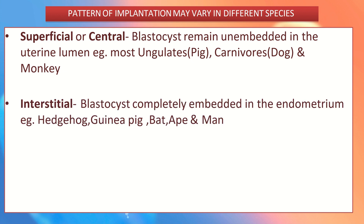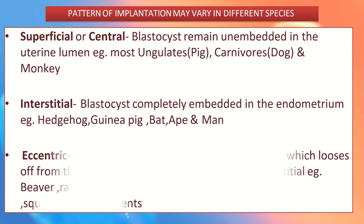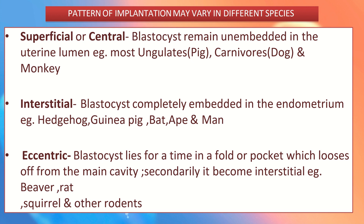Second, this pattern can be interstitial, in which the blastocysts are completely embedded in the endometrium — for example, hedgehog, guinea pig, bat, ape, and man. Third, the eccentric pattern is one in which the blastocyst lies for a time in a fold or pocket that closes off from the main cavity and secondarily becomes interstitial — for example, beaver, rat, squirrel, and other rodents.